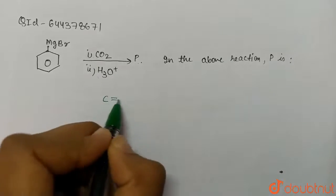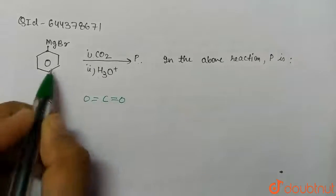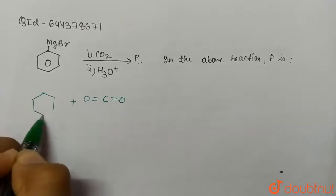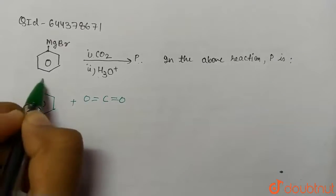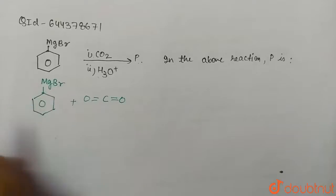We have CO2, and the structure of CO2 is like this. We have to react it with this compound, C6H5MgBr, which acts as a Grignard reagent.